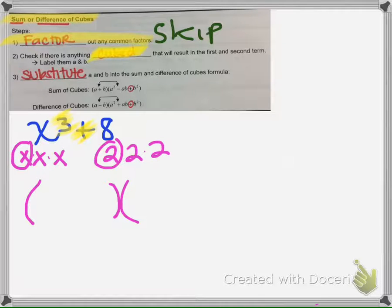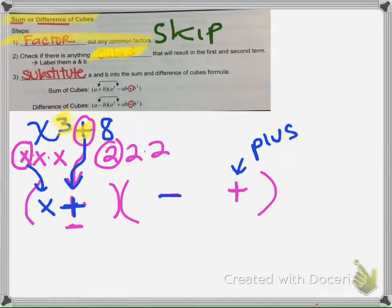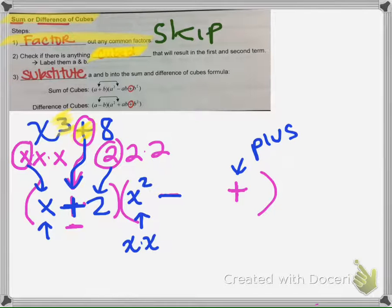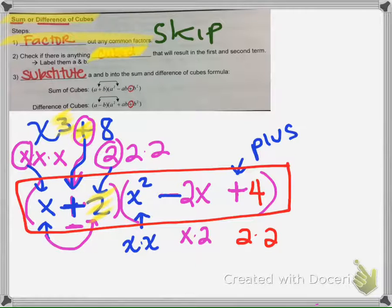Since this is a plus sign, we bring it down. When there's a plus, the next sign in the second factor will be negative, and the last sign is always positive. So the signs follow: same, opposite, always positive. We drop down the x and the 2. What goes in the first position is x times x, which gives x squared. Then we multiply x times 2 to get 2x for the middle. And for the last position, we take 2 times itself, which is 4. That is how you factor a sum of cubes.